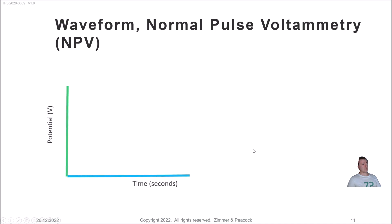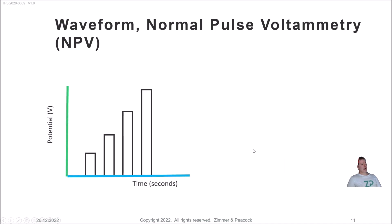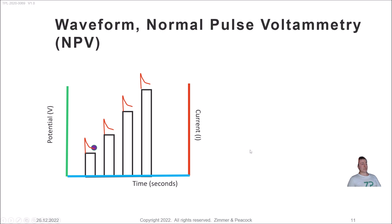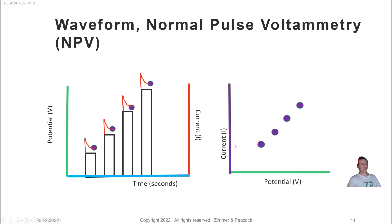Normal pulse voltammetry is different — it's more like linear sweep voltammetry in some ways. You have a series of increasing voltage pulses, and you get a resulting current for each one of those voltage pulses. Again, they don't record at the beginning of each pulse where all the charging current is — they record near the end. The result is plotted out, and it's conceptually similar to linear sweep voltammetry.